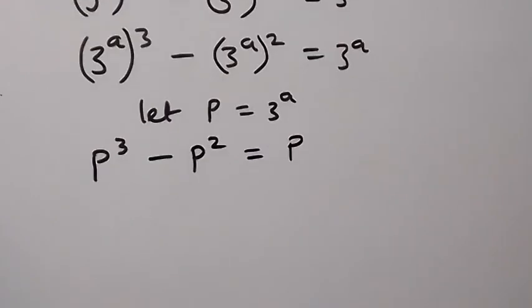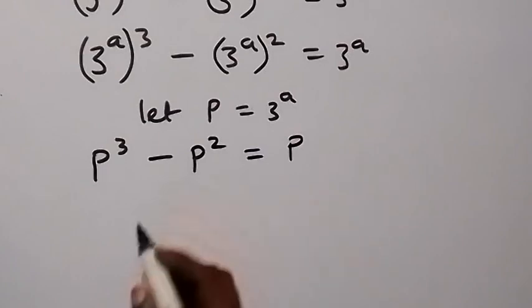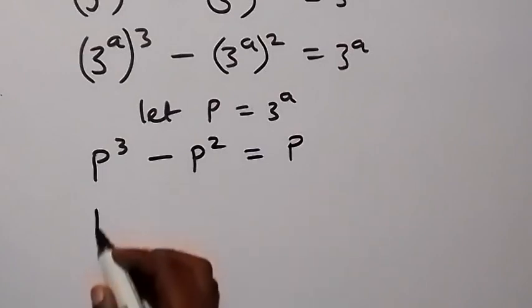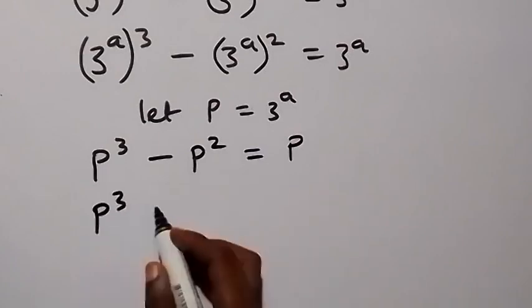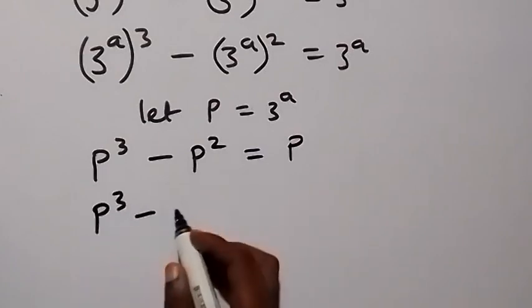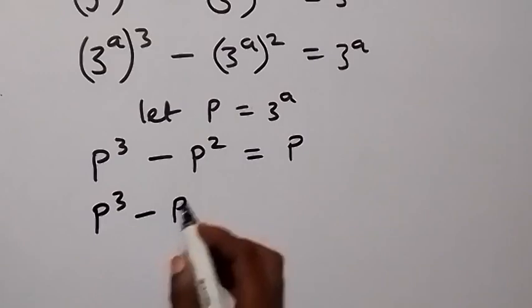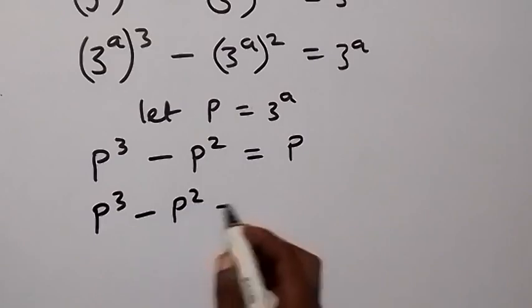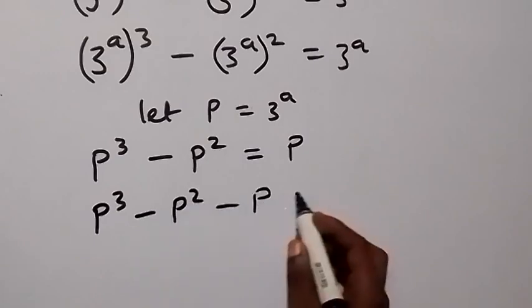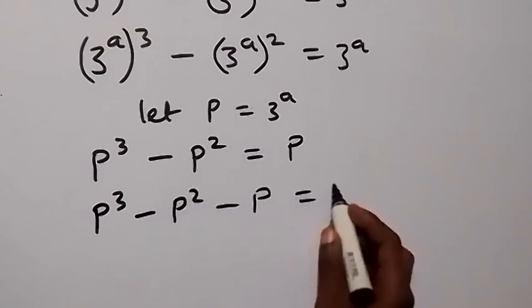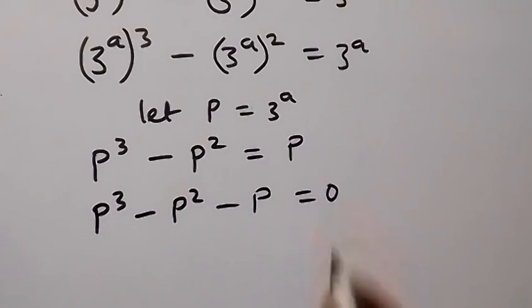Then let's take everything to one side, and this will become p raised to power 3, minus p squared, minus p, equals 0.